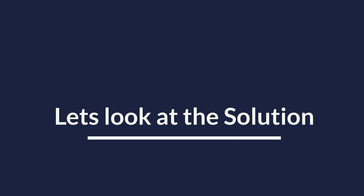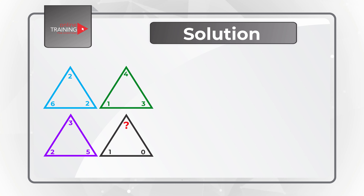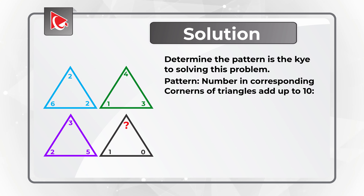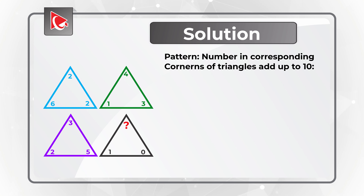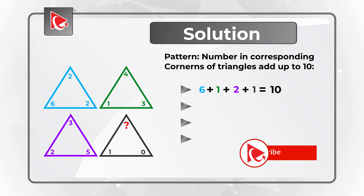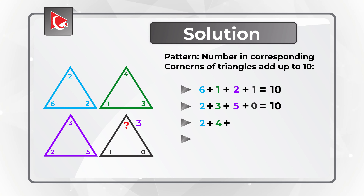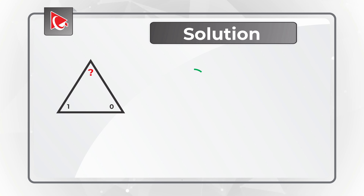The trick about this problem is that the number can be calculated, and the key is to determine the pattern. The pattern here is that the numbers in the corresponding corners of the triangles all add up to 10. Starting with the bottom left corner: 6 plus 1 plus 2 plus 1 equals 10. Bottom right corner: 2 plus 3 plus 5 plus 0 is also 10. So the missing number: 2 plus 4 plus 3 plus question mark equals 10, which means question mark equals 1. The correct choice is Choice B, 1.